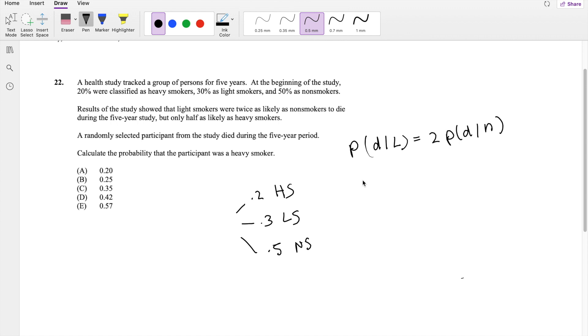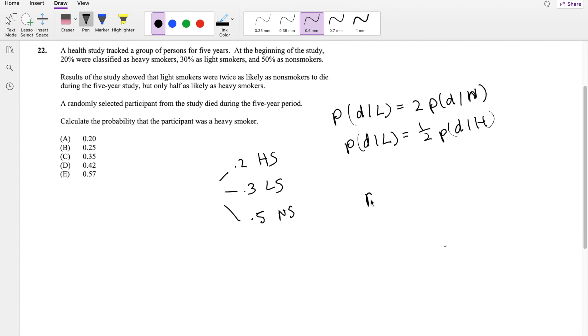And then the probability of death given light smokers is 1/2 as likely as heavy smokers, so death given heavy smokers. Alright, and we're asked to find the probability that the participant was a heavy smoker given that they died.